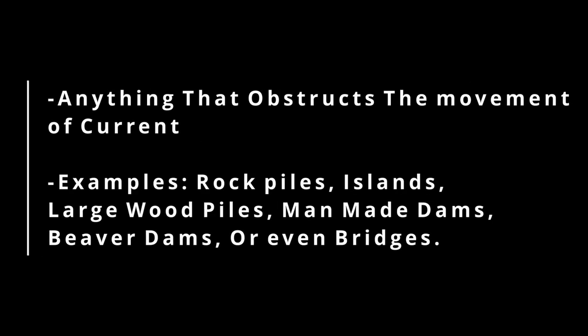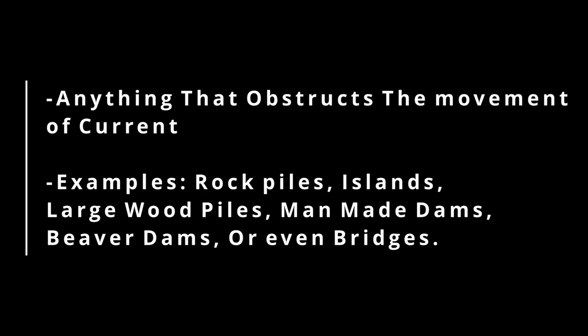Riffle. Riffles can be anything that obstructs the movement of current. Some examples would be rock piles, islands, large wood piles, man-made dams, beaver dams, and even bridges. All these are obstacles for current to push through.